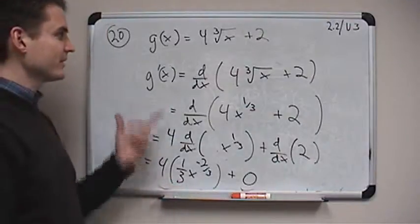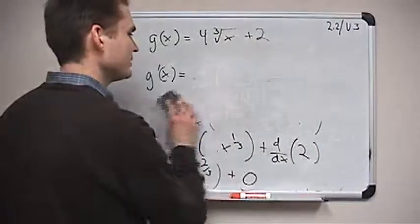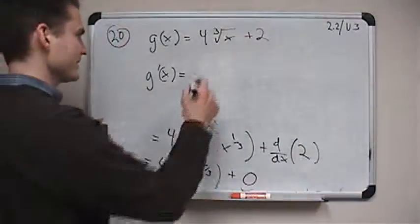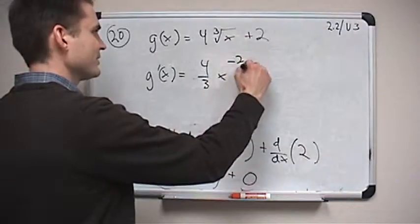So that's the derivative of our function. Again, just a little bit too little room to write this out. So we get 4 thirds times x to the power of negative 2 thirds.